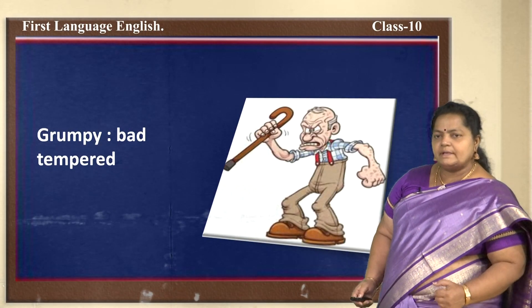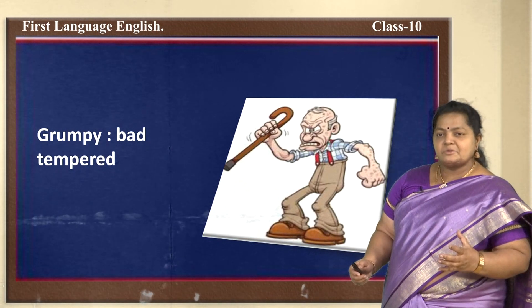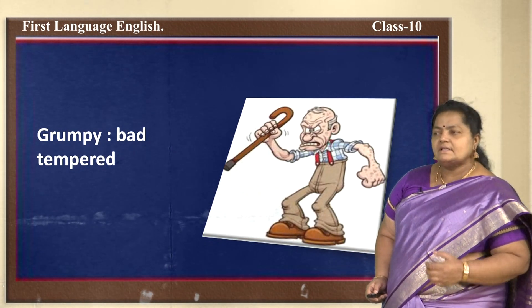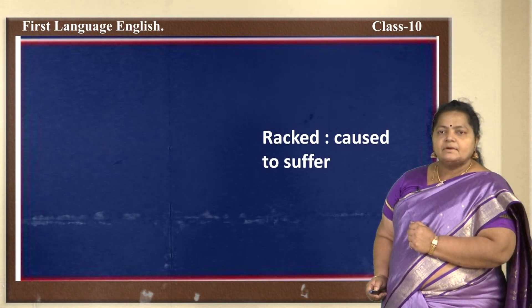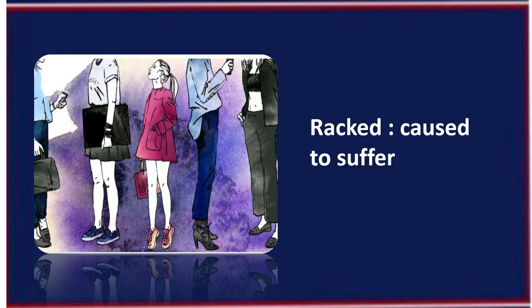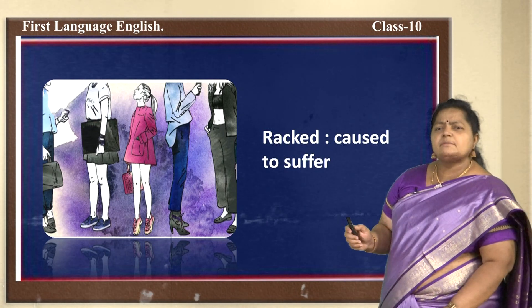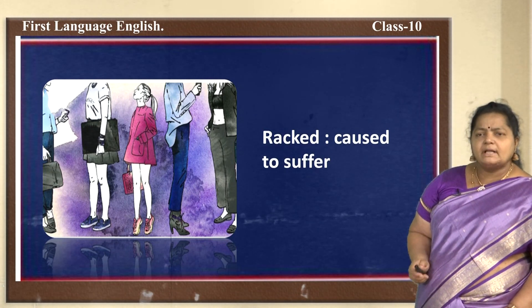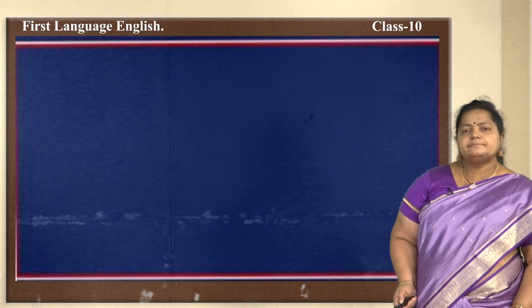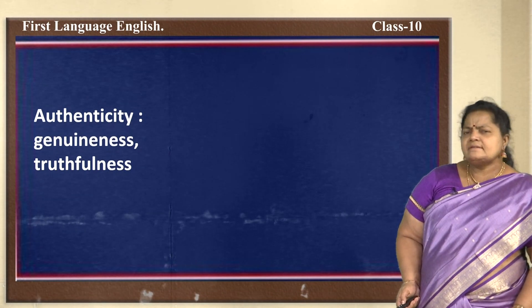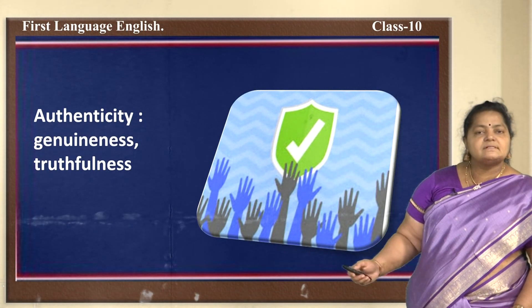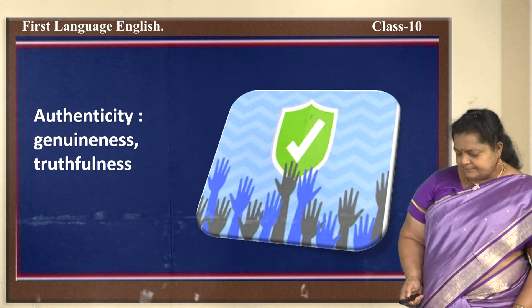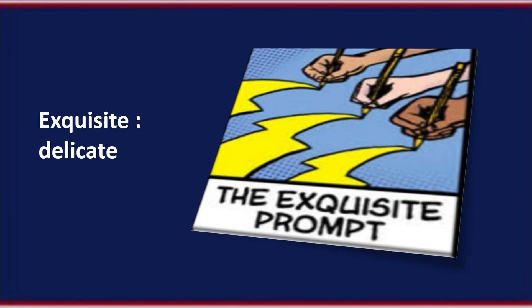'Grumpy' — a bad-tempered person. 'Ragged' — caused to suffer; when somebody is being ragged they are facing a lot of problems and suffering that they can't express to others. 'Authenticity' — genuineness and truthfulness; having perfection. 'Exquisite' — delicate. 'Anonymously' — unidentified; when a poet does not mention his name or just gives a letter, that is anonymous — nameless or addressless.